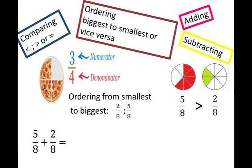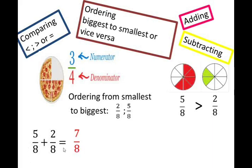When adding fractions, a simple rule to remember is that we need to ensure our denominators are the same before adding. And when we add fractions, you only add the numerator and not the denominator. So if my denominators are the same, I look only at my numerators, which are 5 and 2, and 5 plus 2 is 7. Therefore, 5 eighths plus 2 eighths equals 7 eighths. We only add the numerator — the denominator does not get added; the denominator stays the same as the denominators in your sum.